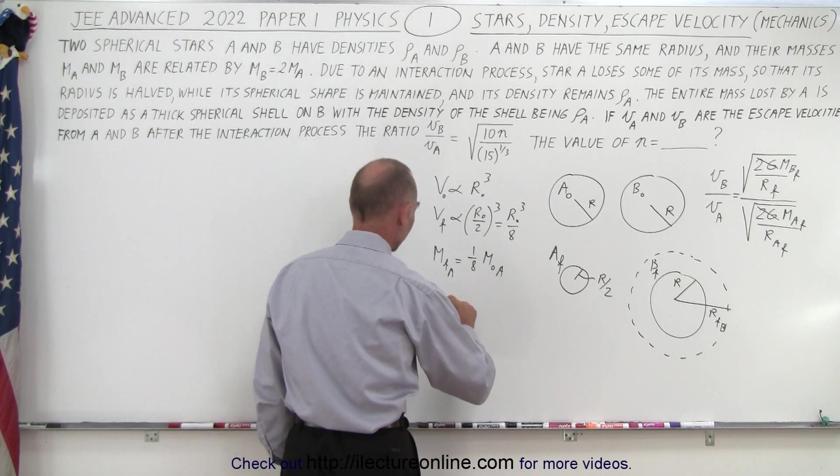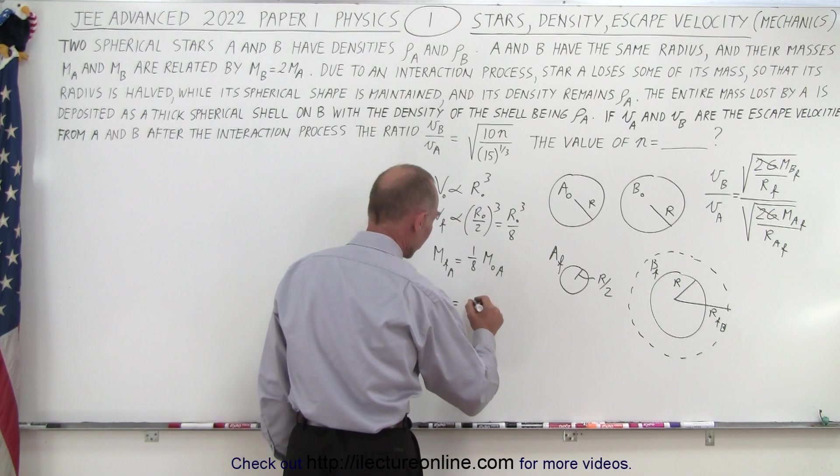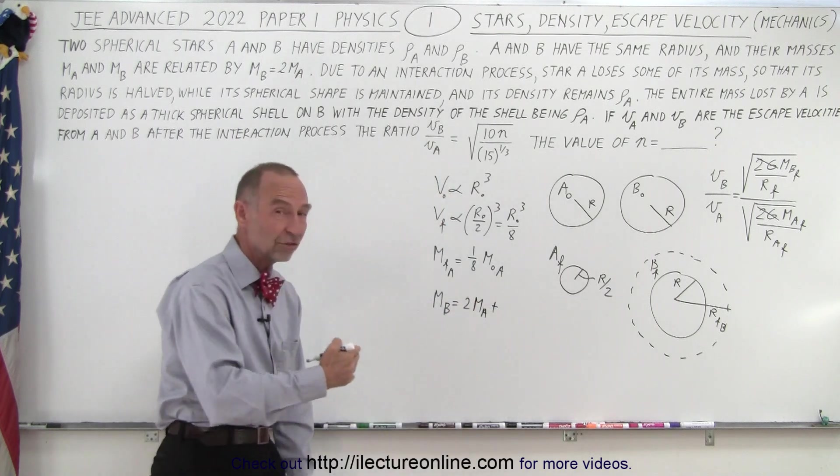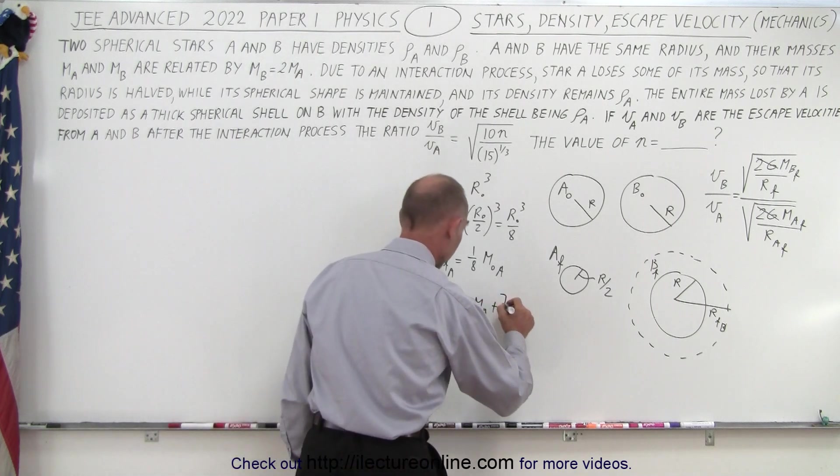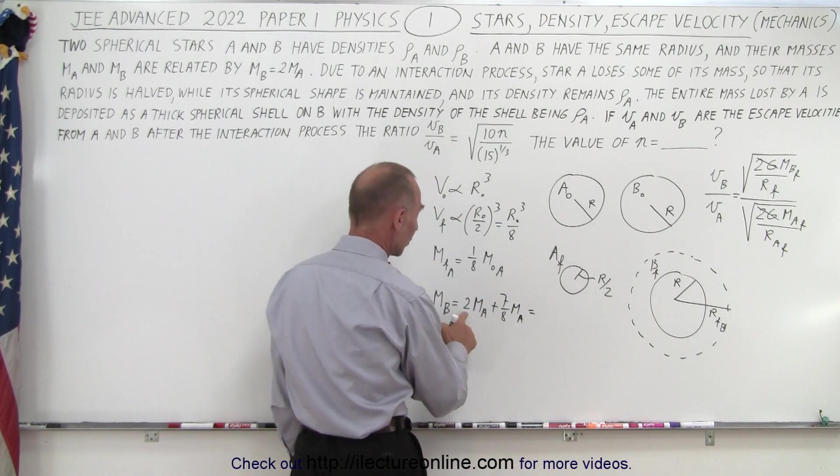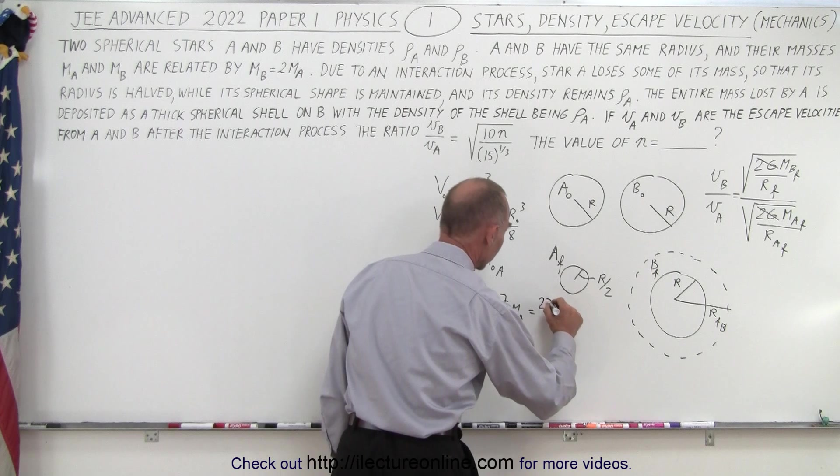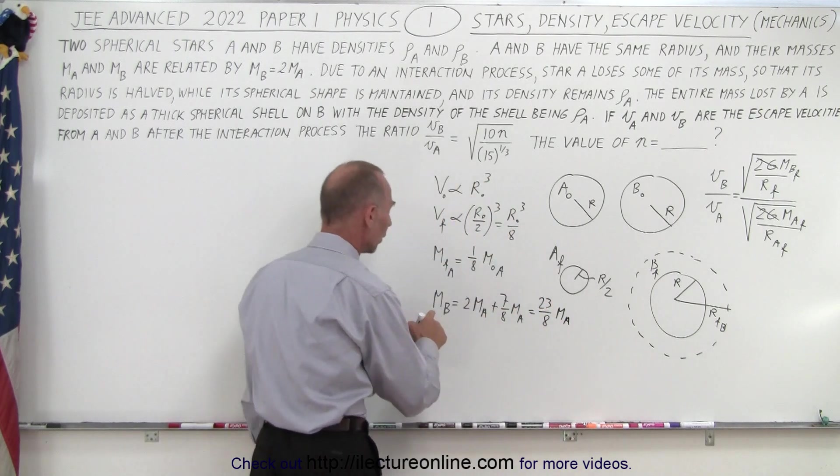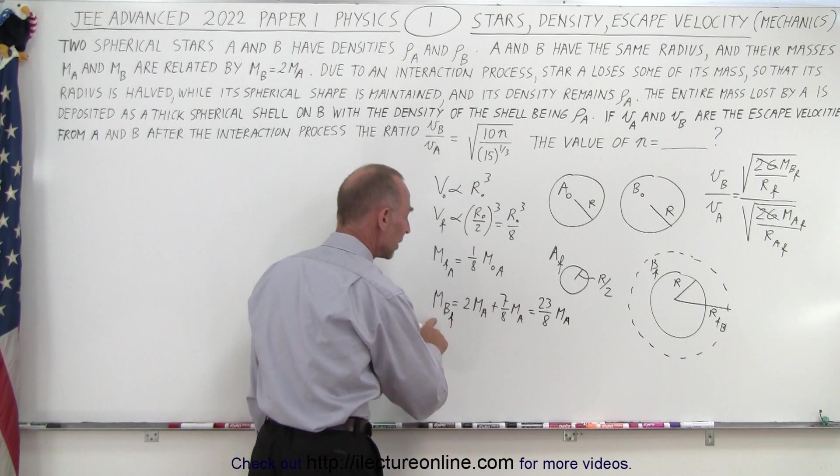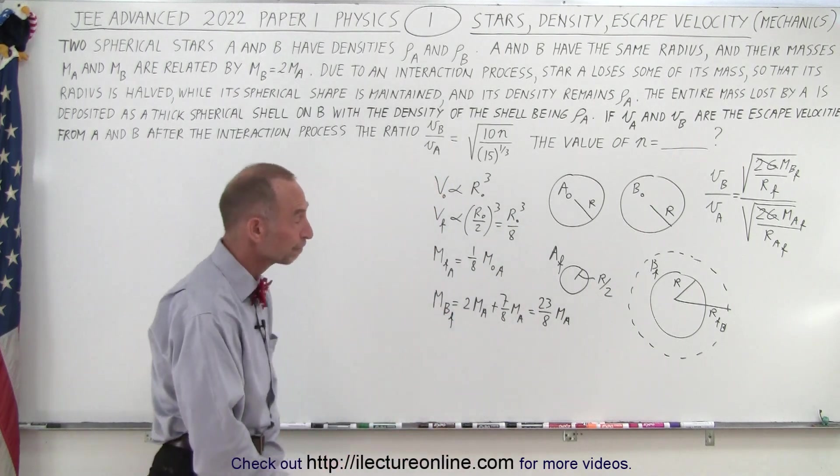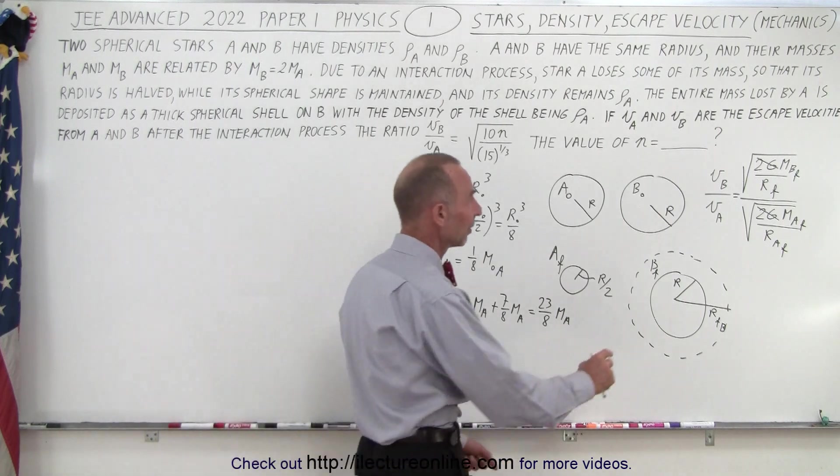How's the mass for B? Well, notice that the mass for B was equal to begin with 2 times the mass of A. But now we gained an additional 7/8 mass of A. So now you can see that that would be 16 over 8 plus 7, which is 23 over 8 mass of A. So now we also know the final mass of B, which is what it started with, plus the additional mass it gained from A.